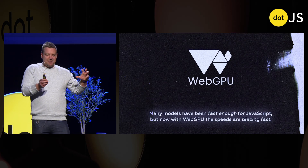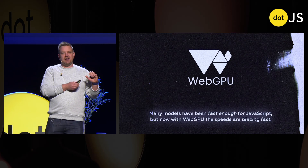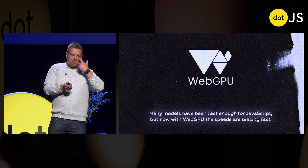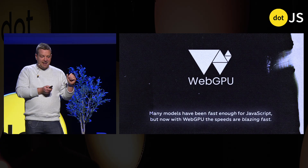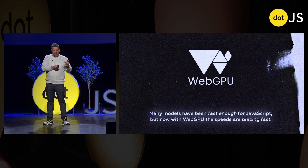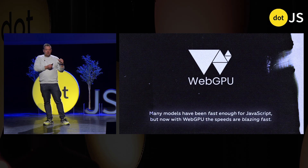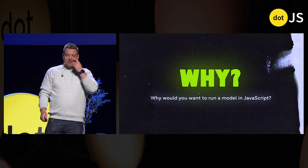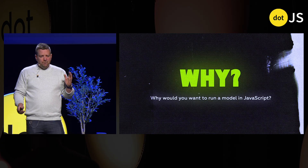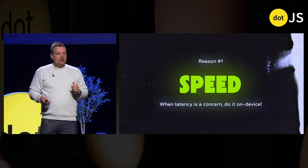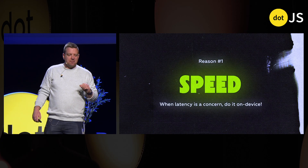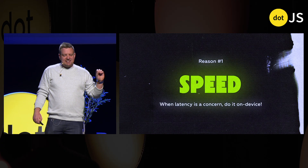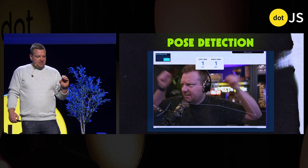We've been able to do a lot of AI and computer vision stuff in the browser for many years. However, now with WebGPU, it actually means that they're fast enough and capable where you can take another look and go, oh, that actually makes sense to run in JavaScript. So why would you want to run a model in JavaScript? The first reason is speed. When latency is a concern, do it on device.